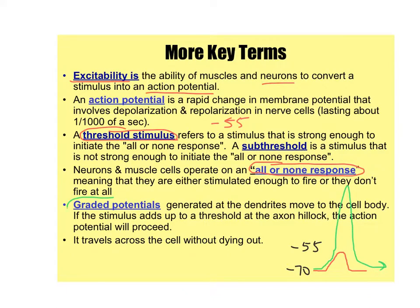Graded potentials are small changes in polarity in the dendrites receiving stimulation from outside — neurotransmitters, pressure, etc. These small changes get added up at the axon hillock, which is where the action potential actually starts. If you add them all up and they reach that negative 55 millivolts threshold, boom — you have an action potential.